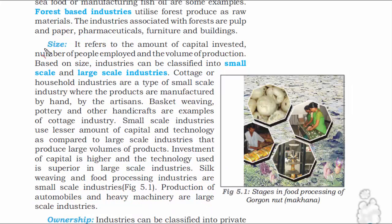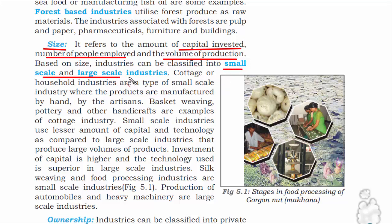The second factor is size. When we say size, we mean how much money is invested in that particular industry, how many people are employed, and what is the volume of production — that is the output. Based on size, industries are classified into two categories: small-scale industry and large-scale industry.